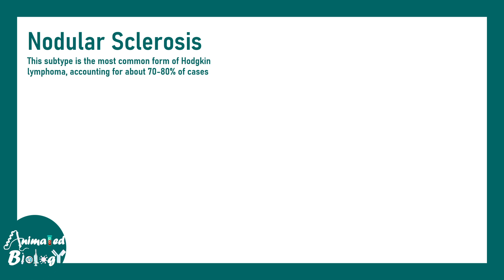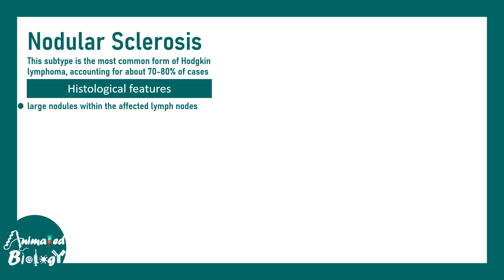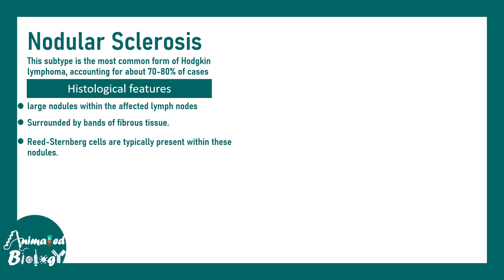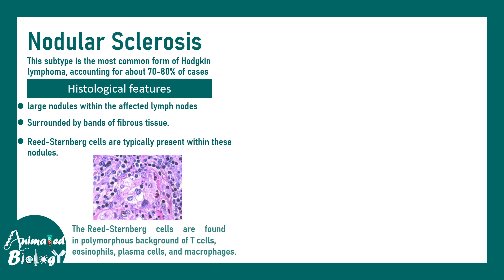Nodular sclerosis is the most common type of Hodgkin's lymphoma, occurring in about 70 to 80 percent of total cases. It has distinct histological features: large nodules within the affected lymph node surrounded by fibrous tissue. Reed-Steinberg cells are typically present in these nodules, and the typical owl's eye appearance is pretty common for nodular sclerosis.